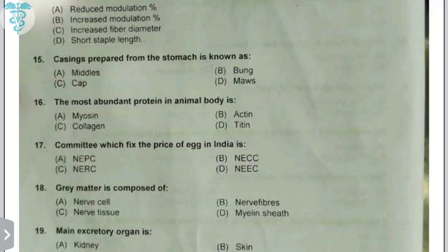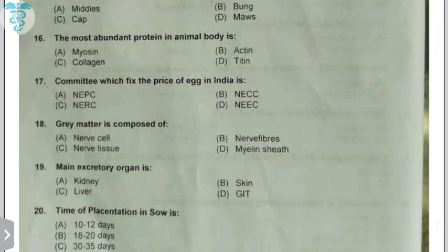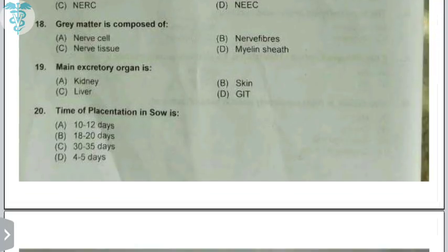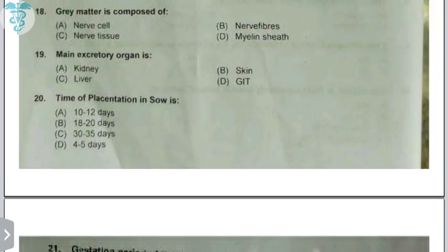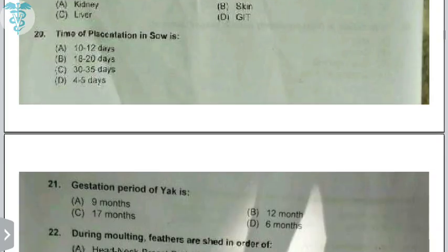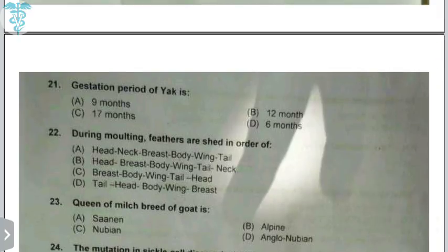Casings prepared from the stomach are called mouse casings. The most abundant protein in the animal body is collagen. The committee which fixes the price of eggs is the NECC — National Egg Coordination Committee. Gray matter is composed of nerve cells. The main excretory organ is the kidney.